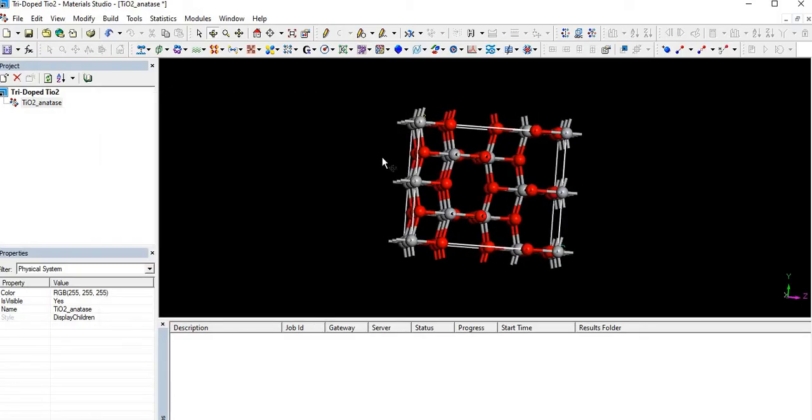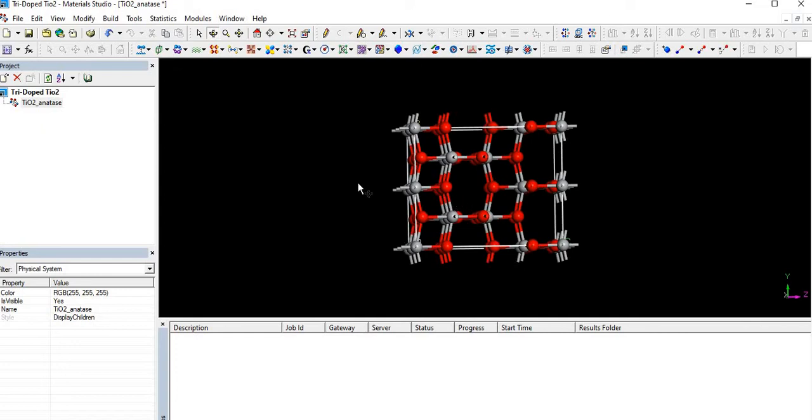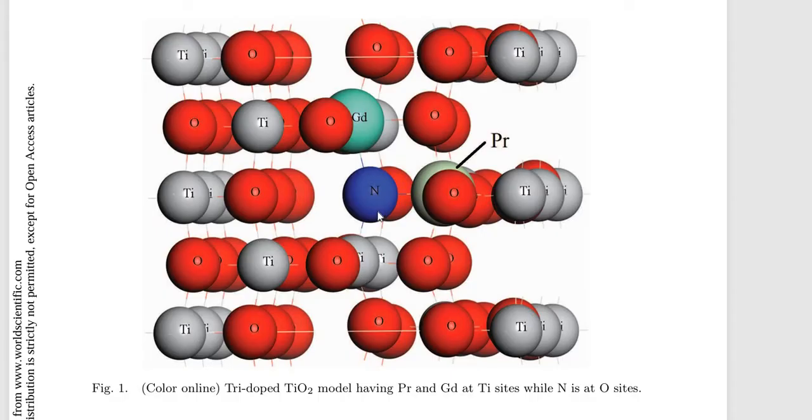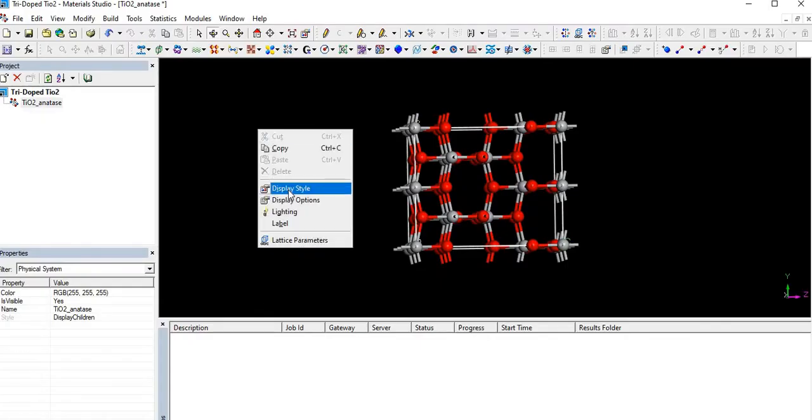Okay, it's now a supercell. Firstly we try to do nitrogen, then gadolinium, then Pr.